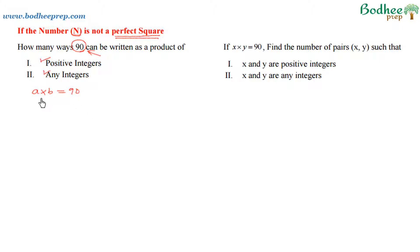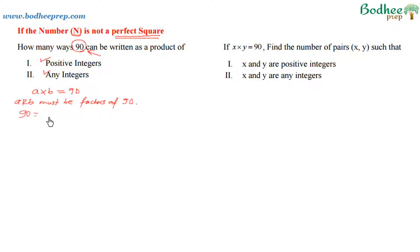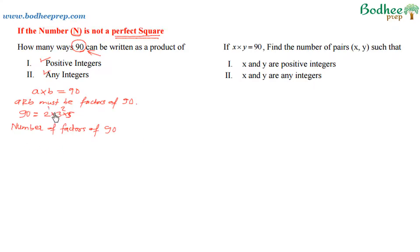One key observation: if a times b equals 90, then both a and b must be factors of 90. Now, 90 can be written as 2 × 3² × 5. To find the number of factors of 90, we apply the direct formula: the power of 2 is 1, giving 2 ways; the power of 3 is 2, giving 3 ways; and the power of 5 is 1, giving 2 ways. So the total number of factors is 2 × 3 × 2 = 12.